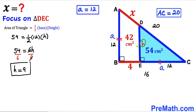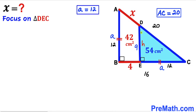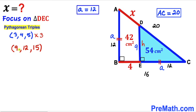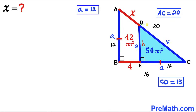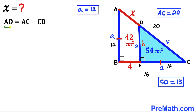Looking again at blue shaded triangle DEC, we recall the Pythagorean triplet 3-4-5 and this time multiply by 3, giving us 9, 12, and 15. Our known values are 9 and 12, so side CD must be 15 centimeters.